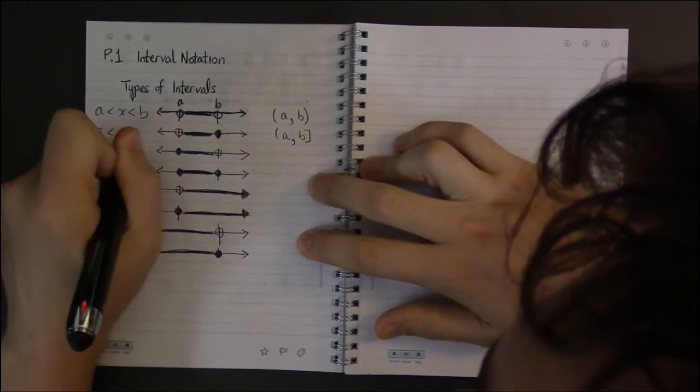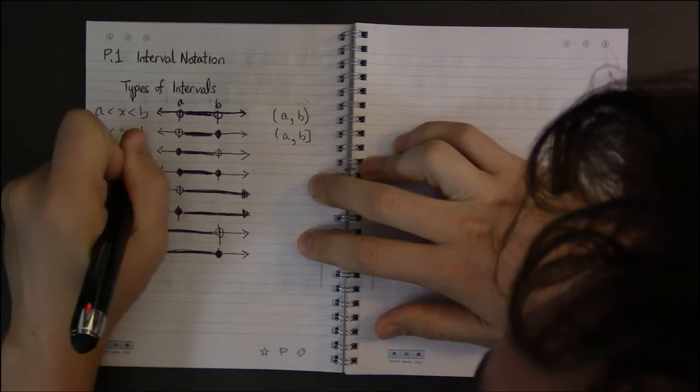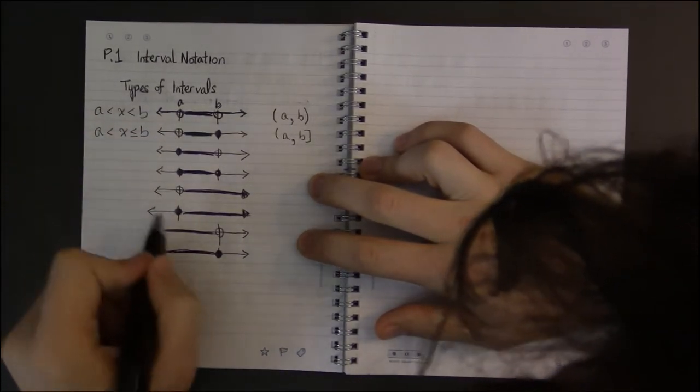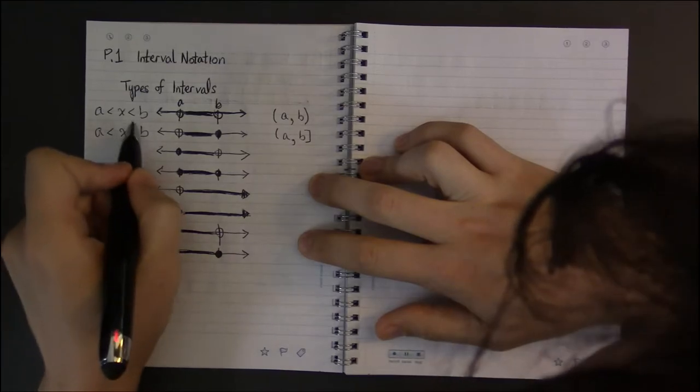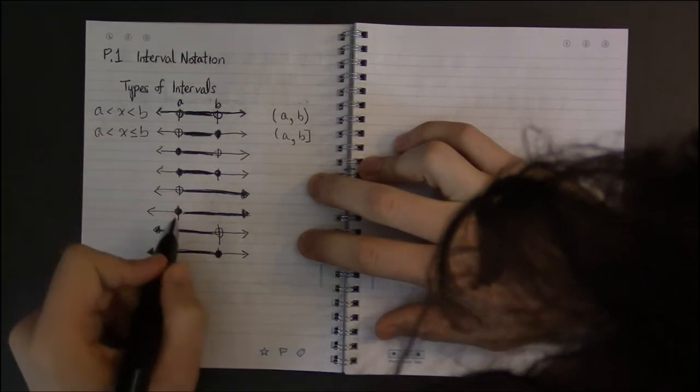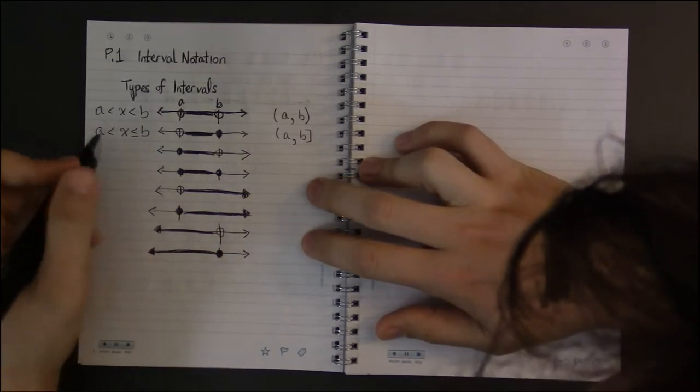And over here, open dots correspond to less than or greater than, and closed dots correspond to less than or equal to or greater than or equal to.